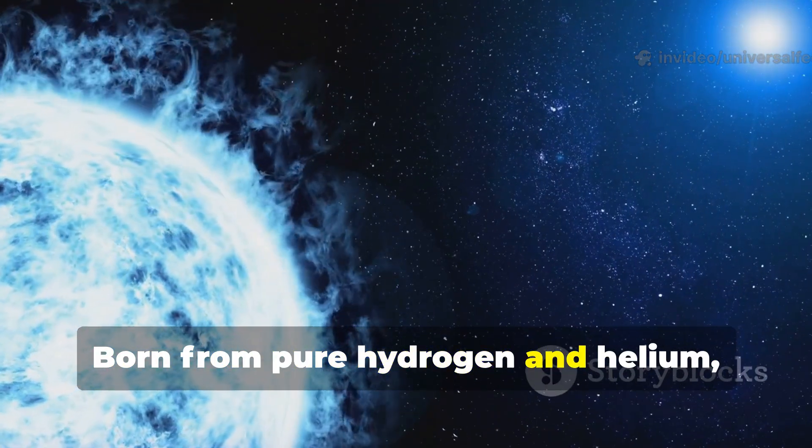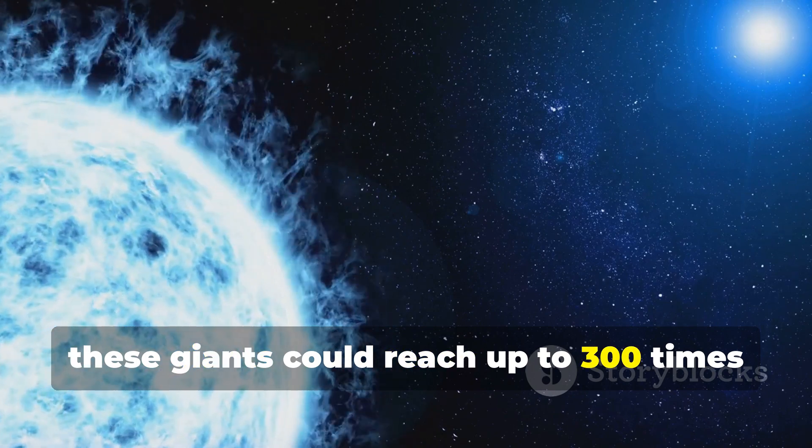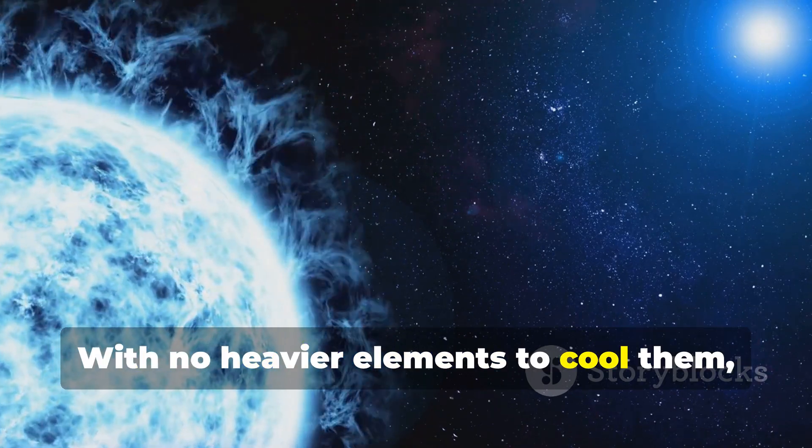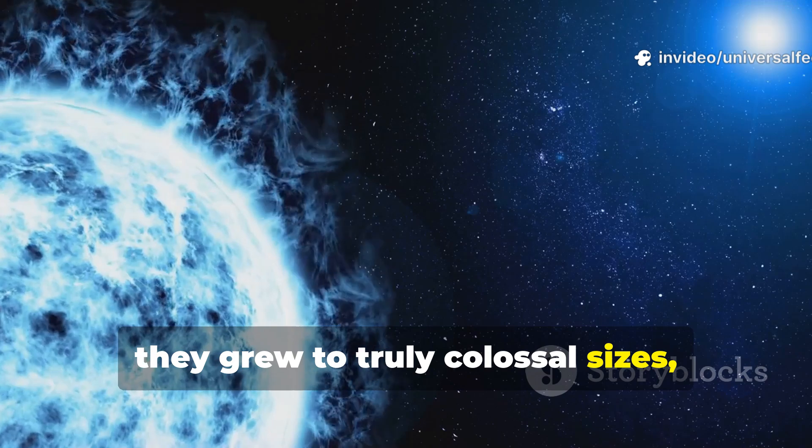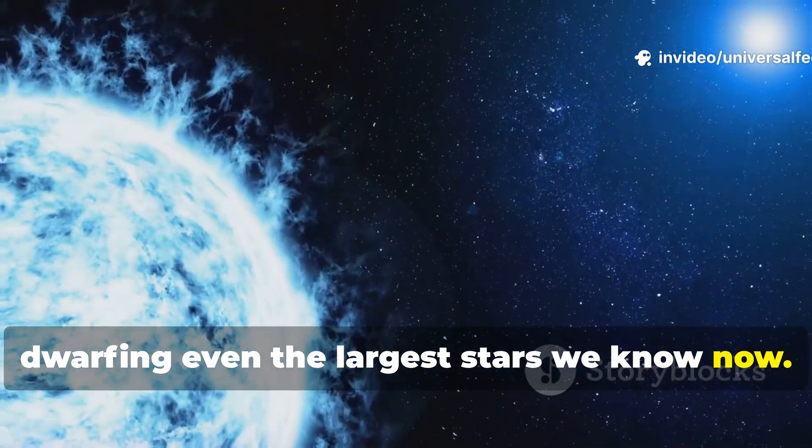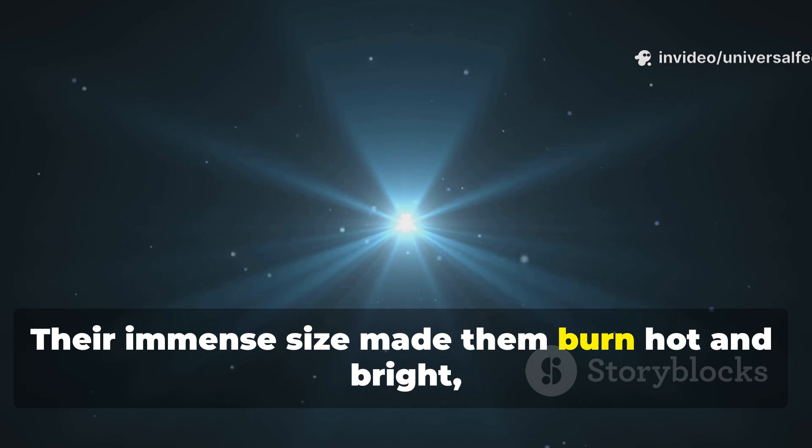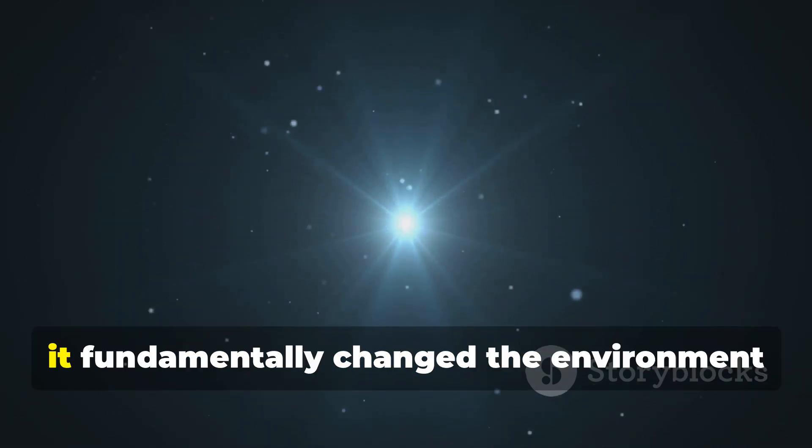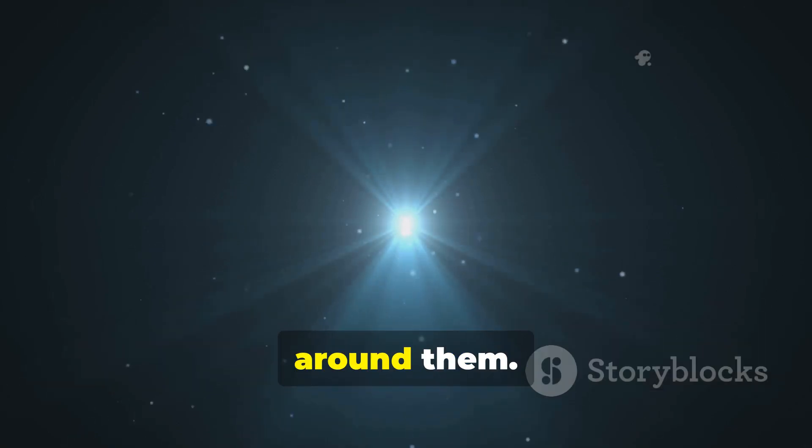Born from pure hydrogen and helium, these giants could reach up to 300 times the mass of our sun. With no heavier elements to cool them, they grew to truly colossal sizes, dwarfing even the largest stars we know now. Their immense size made them burn hot and bright, flooding space with ultraviolet radiation. This radiation was so intense, it fundamentally changed the environment around them.